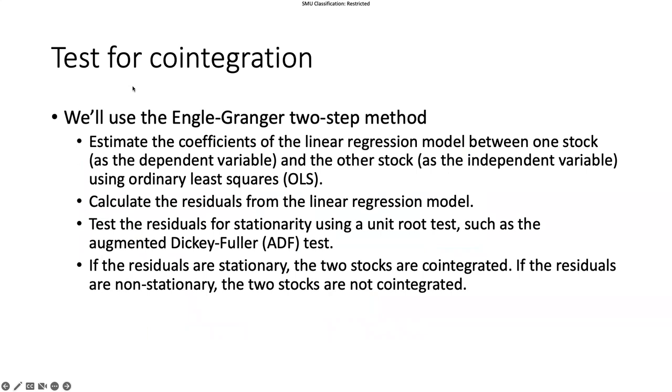Let's dive in more into cointegration. We will use the Engle-Granger test, which involves a two-step process. First, we estimate the coefficients of the linear regression model based on the two stocks, a pair of stocks. This is between one stock as the dependent variable and the other stock as the independent variable. We're going to regress one variable against the other using ordinary least squares (OLS).